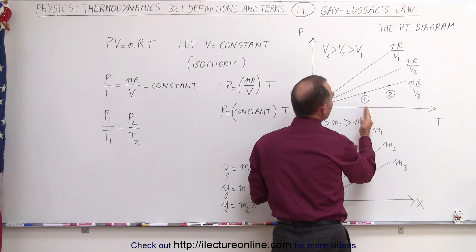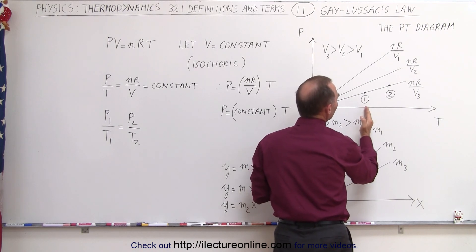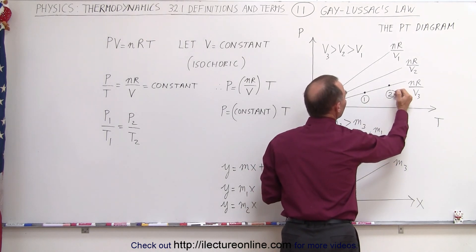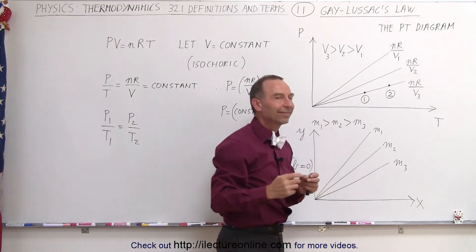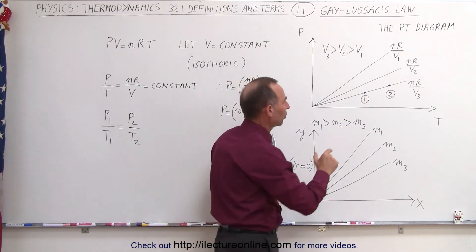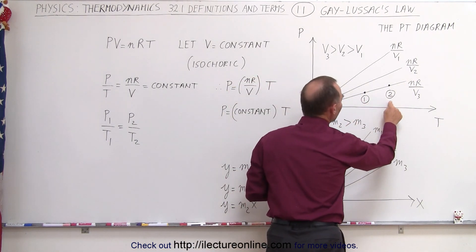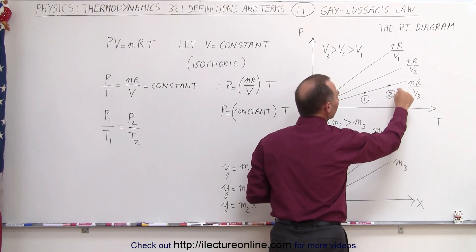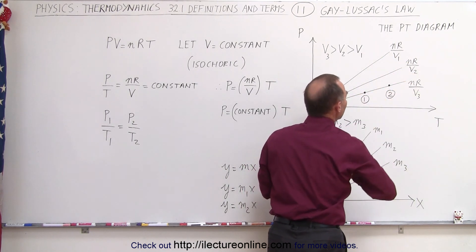Notice, if the temperature increases from 1 to 2, that means the pressure has to increase in a similar ratio. So in other words, if the temperature doubles, then the pressure doubles. If the temperature triples, then the pressure triples. And that's what we see here.